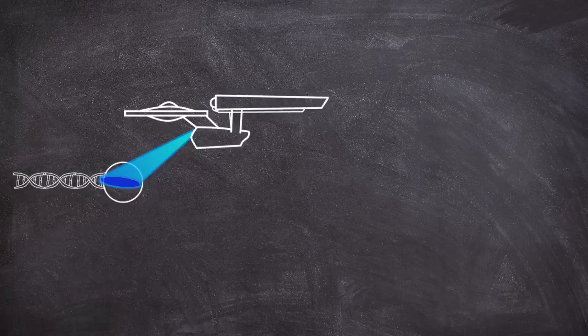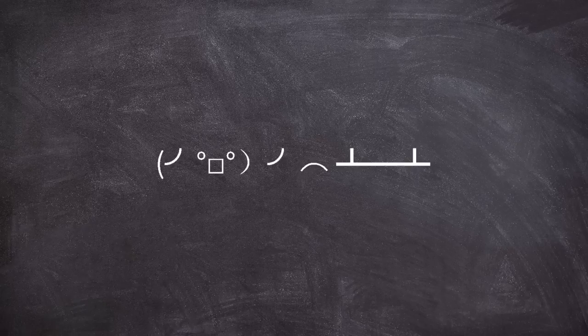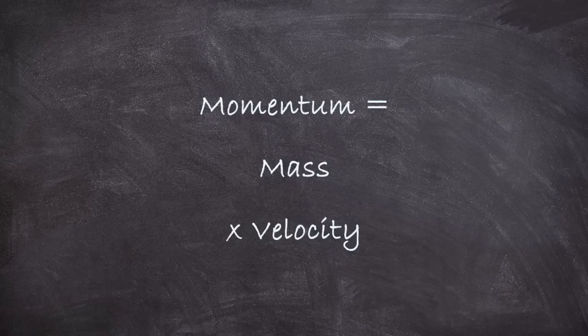Well, to understand that, first we have to understand something very important, that light has momentum. Now, if you've ever taken a physics class, you might find that seemingly impossible. You may have learned that momentum is equal to the mass of an object times its velocity. You also learned that light has no mass, ergo seemingly no momentum.